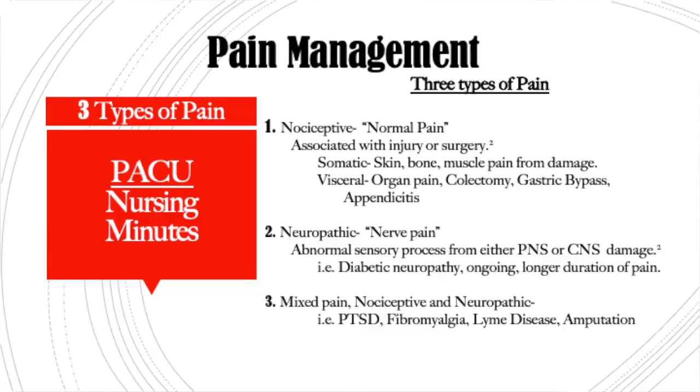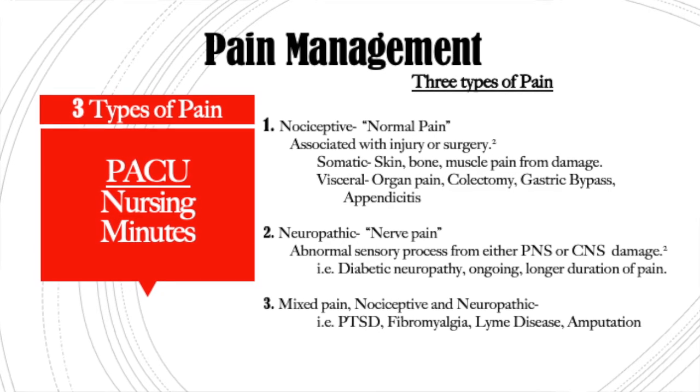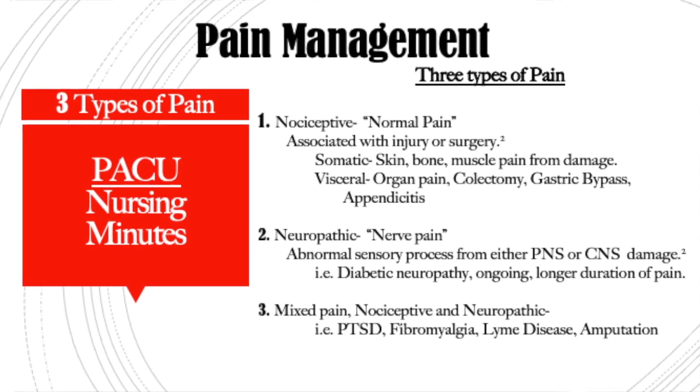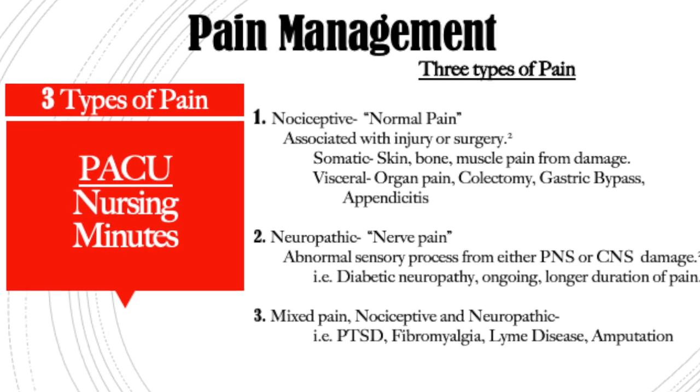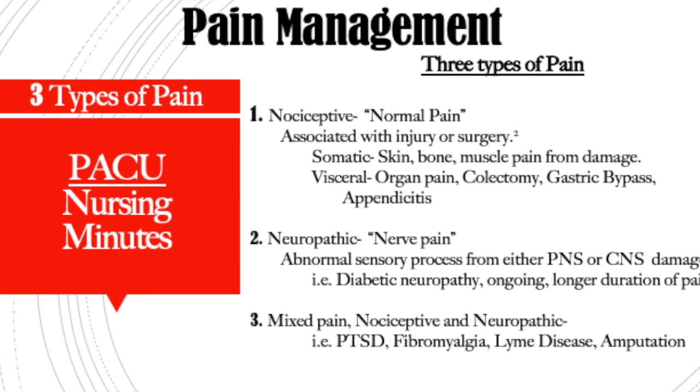Thirdly, we have mixed pain, which is a mixture of nociceptive and neuropathic. A good example is a below-the-knee amputation patient — they've just had surgery, so the nociceptive pathway is triggered, and the neuropathic pathway is also triggered because there is now an abnormal process between the peripheral nerves and the central nervous system. Mixed pain is also seen in fibromyalgia patients, PTSD patients, and Lyme disease can be considered mixed as well.